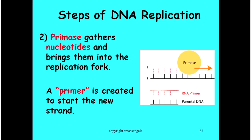Step 2: another enzyme called primase takes individual nucleotides and brings them into the replication fork to create something called a primer. That primer is like a tag that says, 'this is where we're going to start making our new strand.' Where you wrote in primer, you might also write in parentheses 'tag to start the new strand.'